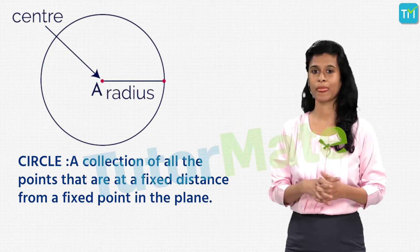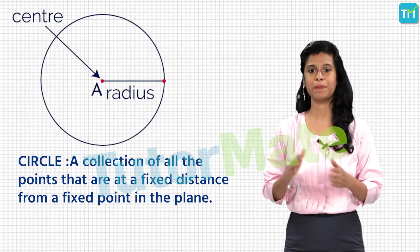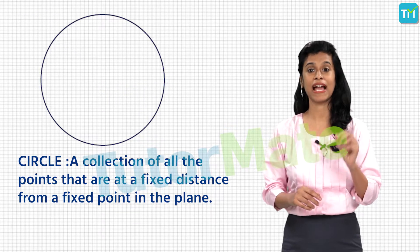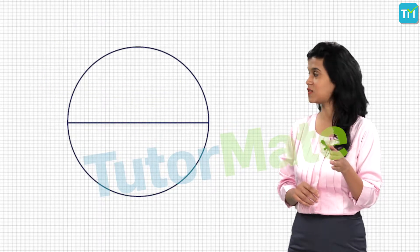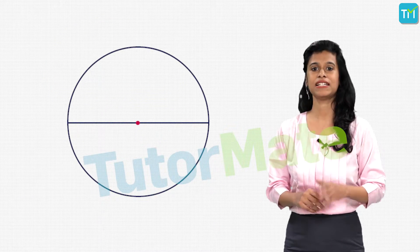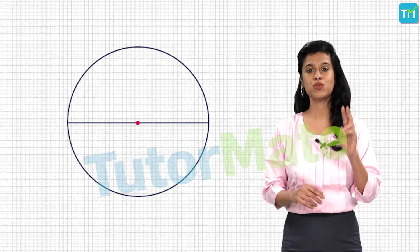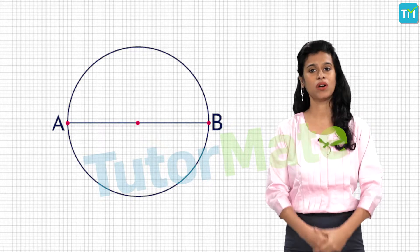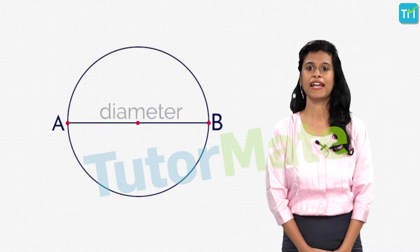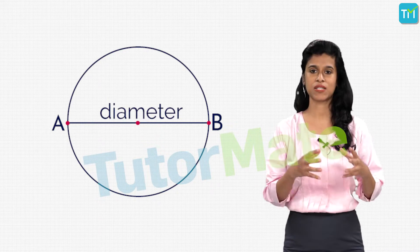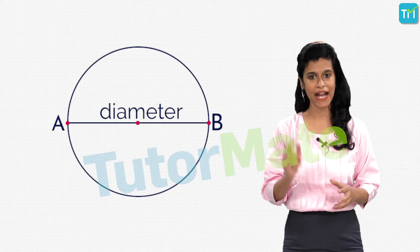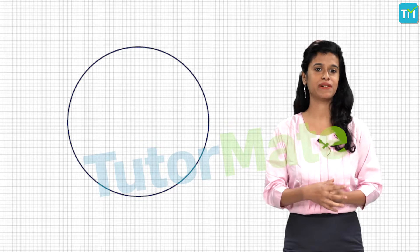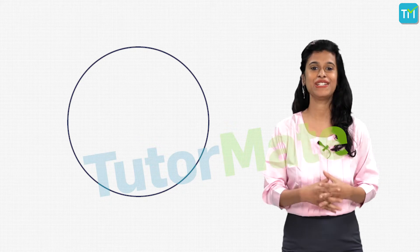Also we know that if we have a line passing through the center of the circle such that it meets the circle at two distinct points A and B, then AB is called the diameter of the circle. And length of the diameter is twice of that of the radius. Now whenever we draw a circle on a sheet of paper, we can say that this sheet of paper is the plane on which the circle exists, right?